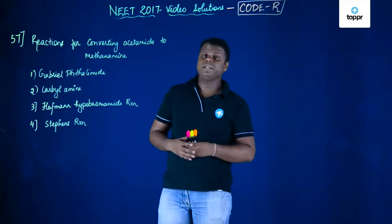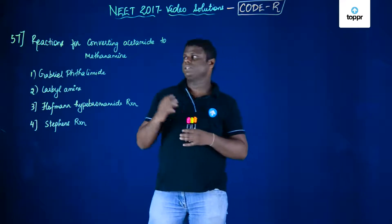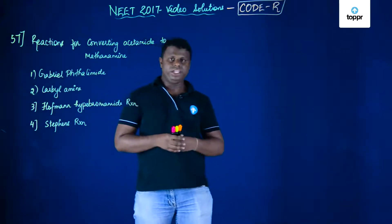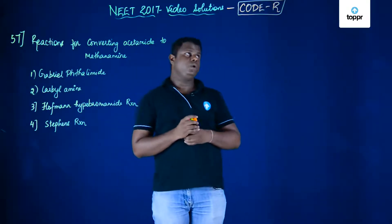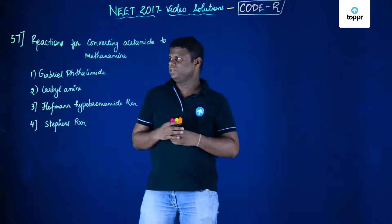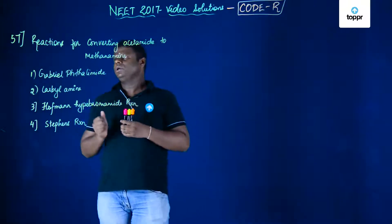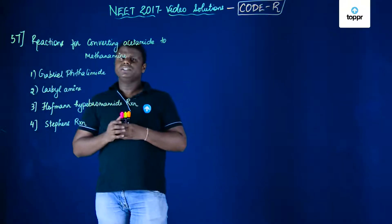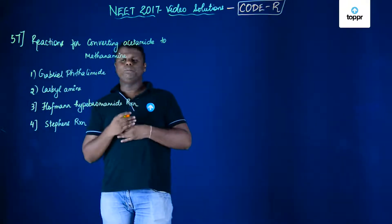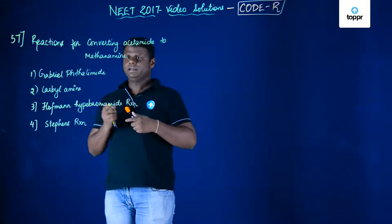Let's move on to the next question, which is question number 57, again for the NEET 2017 code R. Let's look at the video solutions. The question is about the reactions for converting acetamide to methanamide.